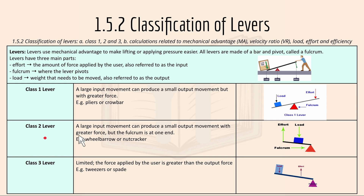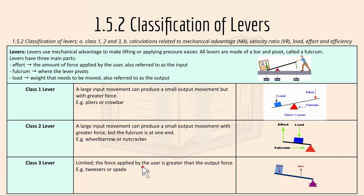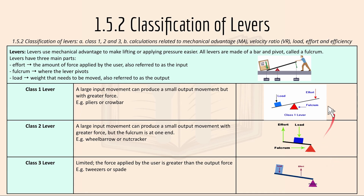For a class 2 lever, a large input movement can produce a small output movement with a greater force, but the fulcrum is at one end — like a nutcracker. And for a class 3 lever, it's limited and the force applied by the user is greater than the output force, like a tweezer. Different levers are suitable for different scenarios.